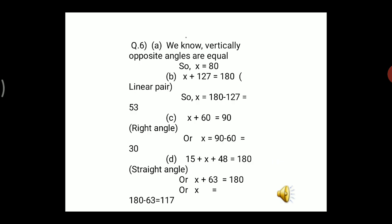Part c: the angles 15°, x, and 48° form a straight angle. Therefore 15° + x + 48° = 180°, so x + 63° = 180°, which gives x = 180° − 63° = 117°.